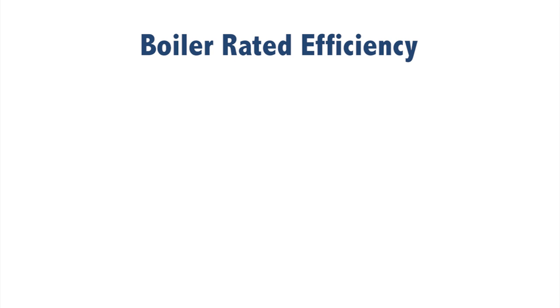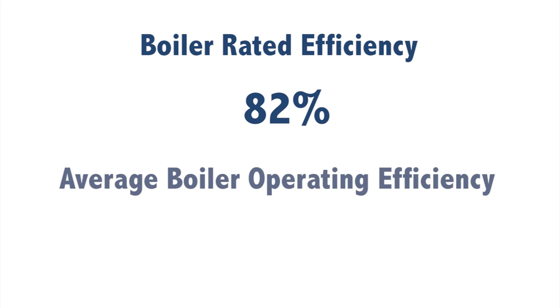If you take a fluidized bed combustion boiler, the efficiency promised by the boiler manufacturer is 82% with the air preheater and the water preheater included. But when you really run the boiler, typical average efficiency for these boilers is 63%. So why is the gap? On one hand, there is a promise of 82% while the operating efficiency is 63%. So what is the reason for this gap?